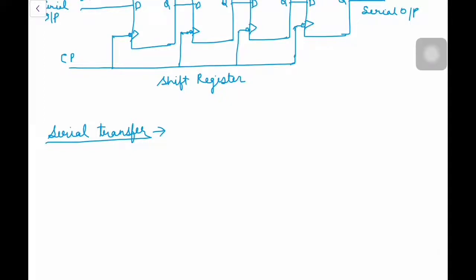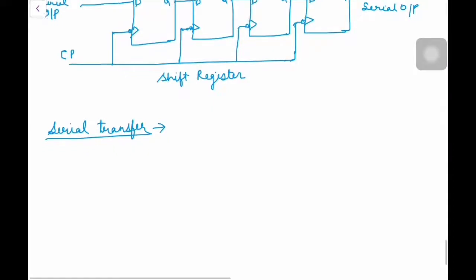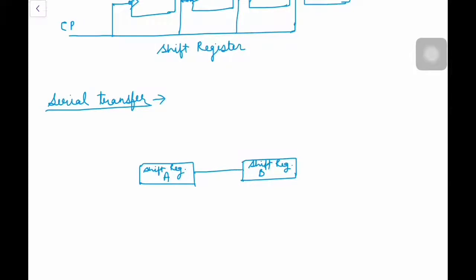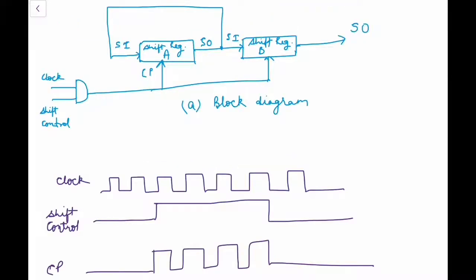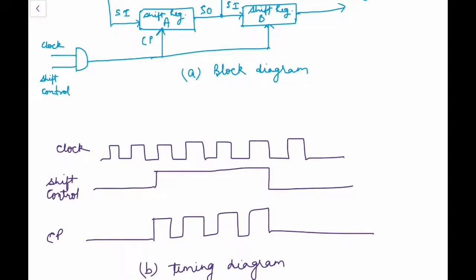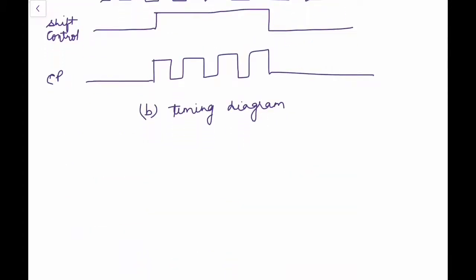We will see how a serial transfer of information is done from register A to register B. We will draw a block diagram for this purpose. There are two shift registers — we already saw how to design and operate a shift register. To shift the contents of register A to register B, there must be a shift control input signal and a clock pulse. Whenever the shift control is high, the bits of shift register A will transfer serially to shift register B.